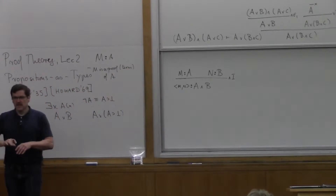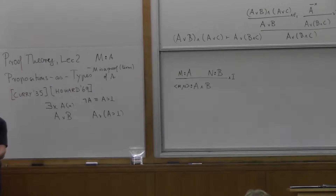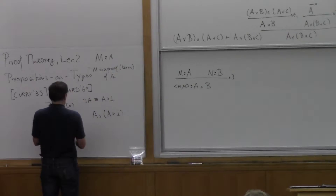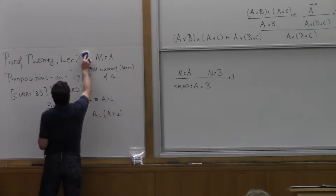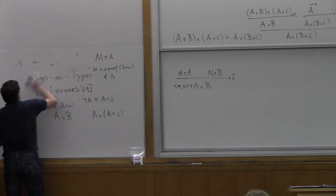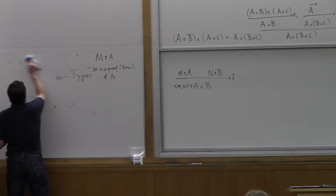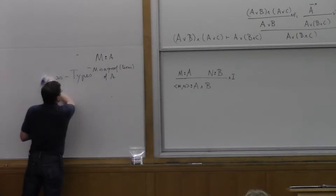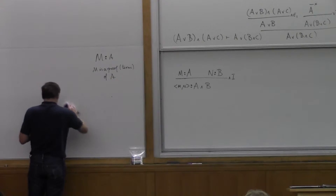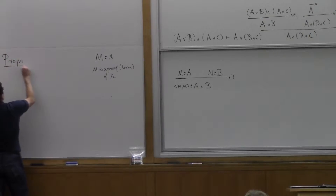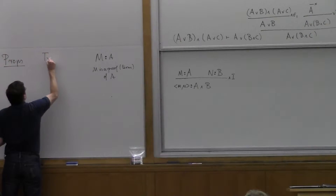I'm going to go back and forth between saying a term of type A or a proof of A, because I'm generally going back and forth between these two points of view. So here we have our propositions, and here we have our types.